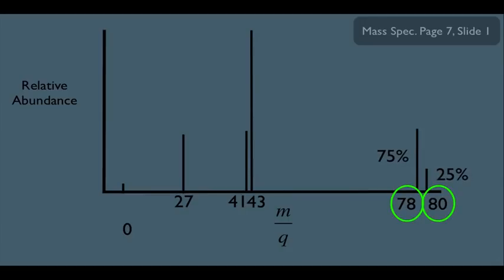This is something very obvious on the mass spec. If you see a peak at some value and an M-plus-2 peak that's one-third its height, you'll know right away the molecule has Cl. If you see two peaks of roughly equal height at the end of the spectrum, the molecule has Br. If there's no M-plus-2 peak, the compound likely doesn't have any halogens.